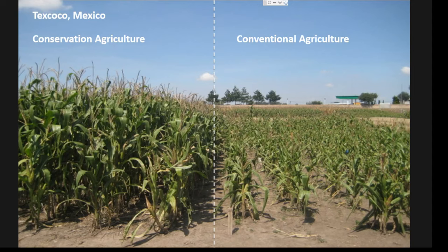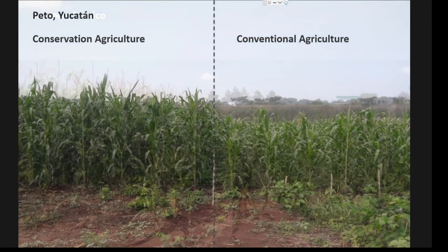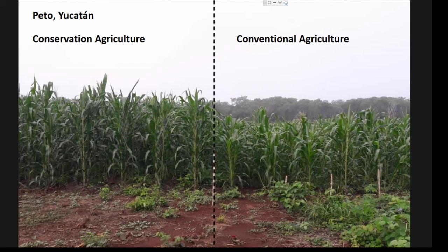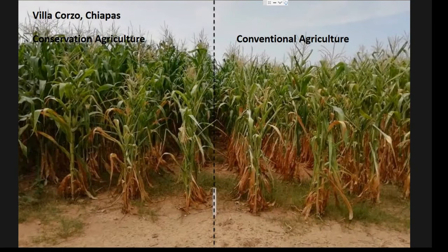Many of you have seen this picture taken in 2009 here in Texcoco, where in a dry year the conventional system on the right suffered greatly from drought stress, while conservation agriculture on the left had residue cover and more organic matter, retaining more moisture and suffering much less from water stress — leading to a large yield difference. The same effect can be observed from this year in Peto, Yucatan, in a traditional Milpa system: when we stop burning and maintain residue cover, we see large differences in plant development and yield.